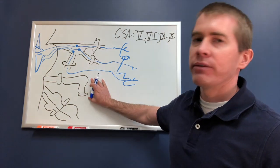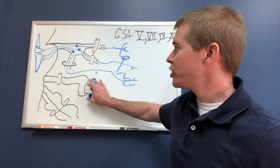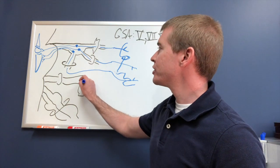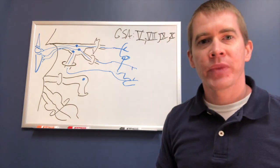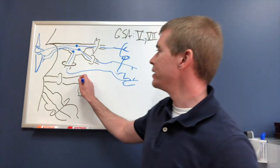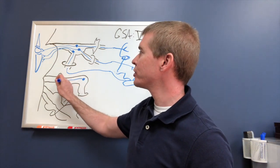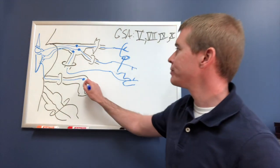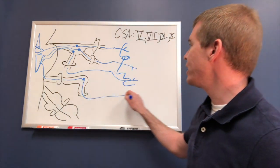Now we have facial to do. Facial has its geniculate ganglion in the facial canal. These sensory neurons are located there in that geniculate ganglion. Its central process travels through the internal auditory meatus, and they synapse on the spinal trigeminal nucleus.